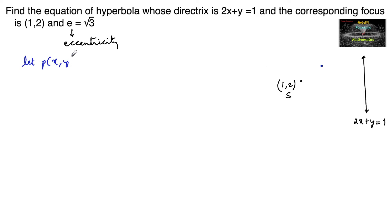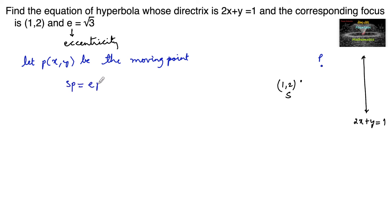Let P be the moving point such that the equation of a conic is SP equals e times PM. That is, the distance from S to P is equal to the eccentricity times the perpendicular distance from the point to the fixed line, which is the directrix. Or we can write SP square is equal to e square times PM square.